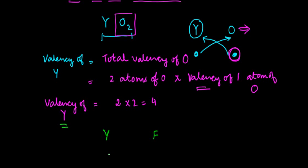Now Y has a valency of four, right? And the valency of fluoride or fluorine is one, right? In such a case, if you are forming an element, okay, or a fluoride of Y, then these valencies are going to cross each other.